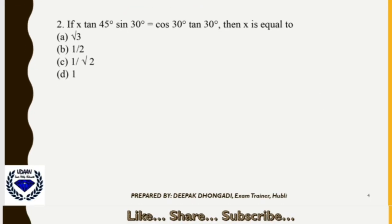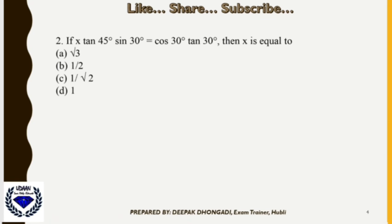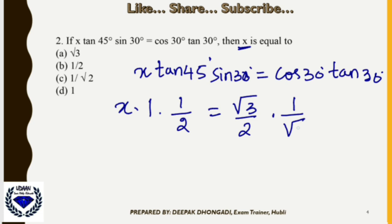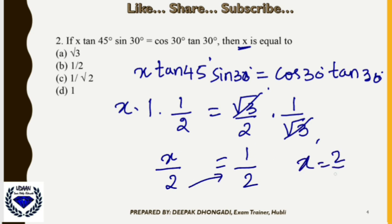Question 2: x · tan45° · sin30° = cos30° · tan30°. Find the value of x. Substitute the standard values: tan45°=1, sin30°=1/2, cos30°=√3/2, tan30°=1/√3. On the right side, √3 and √3 cancel, giving 1/2. On the left, x/2 remains. Taking 2 to the numerator: x = 2/2 = 1. So the correct option is D.